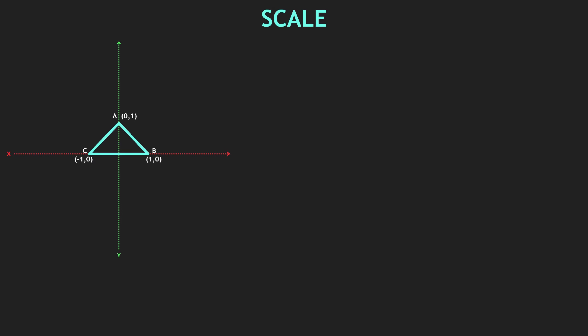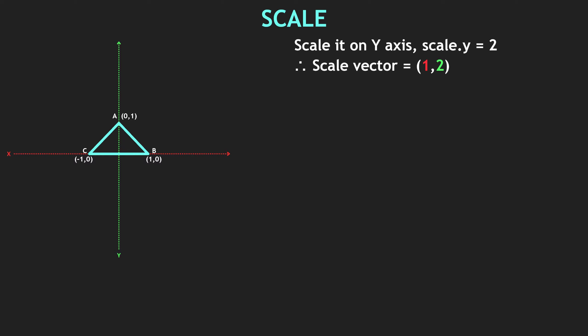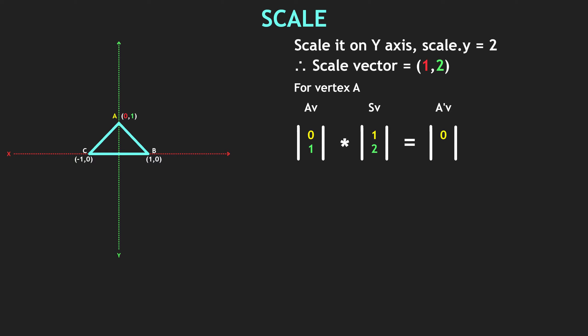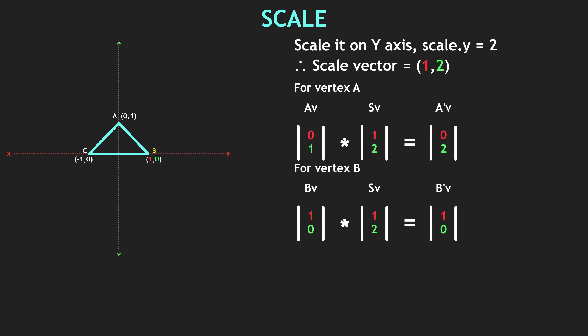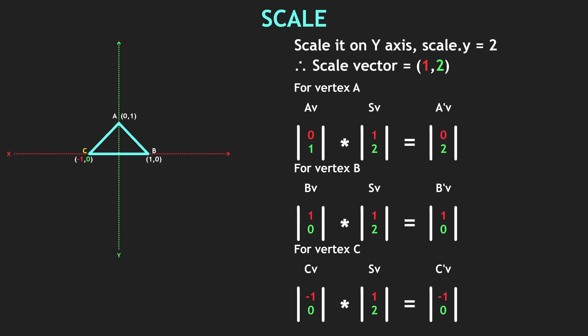We have our triangle and we want to scale it on the y-axis. Essentially, scale y equals 2. So our scale vector will be (1, 2) — we don't want to scale on x, and we want to scale on y by 2 units. For vertex A, we take our A vector and multiply it with our scale vector. So 0 × 1 = 0 and 1 × 2 = 2. We get a new vector which is the new position for vertex A. We do the same for vertex B and vertex C, and with our new A, B, and C we get our scaled triangle.